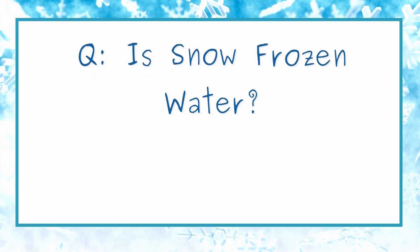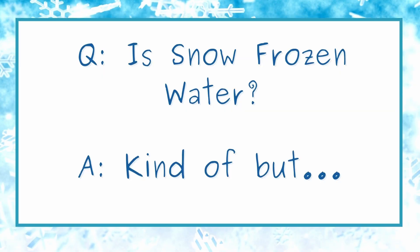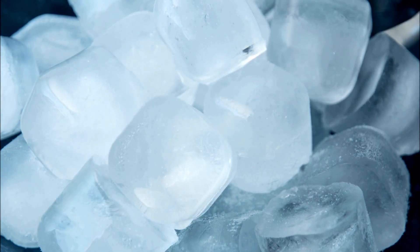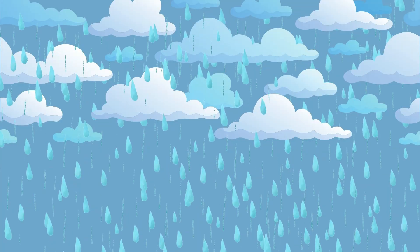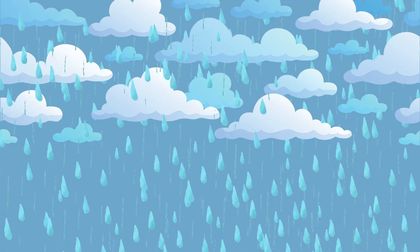Before we talk about what exactly a snowflake is, first we have to figure out what snow is. Your first answer might be that it's just frozen water, and that's kind of true. But if it's just frozen water, then how is it different from ice? It turns out that snow is a little bit more than frozen water. Snow starts out as raindrops really, really high up in the sky. But raindrops aren't the only thing that's up there.